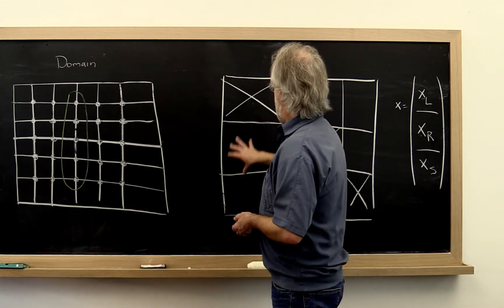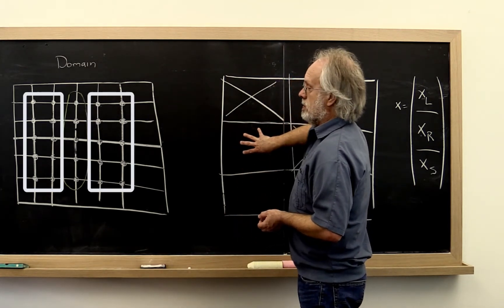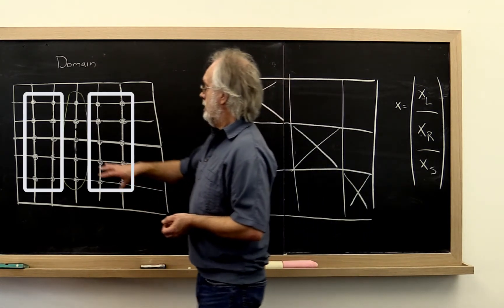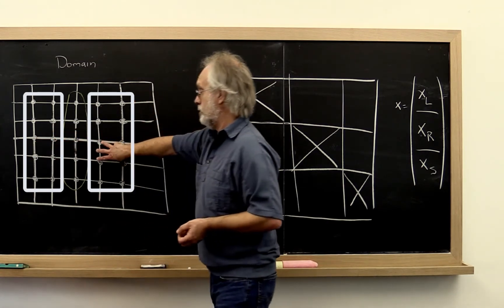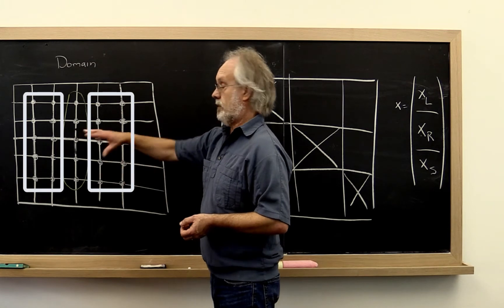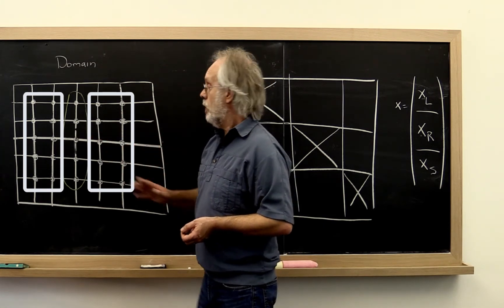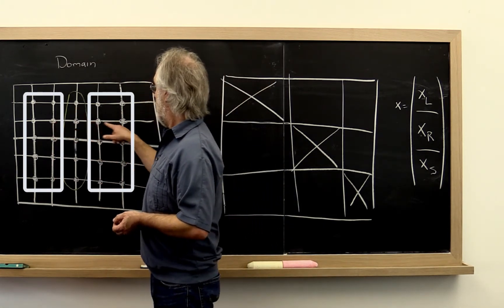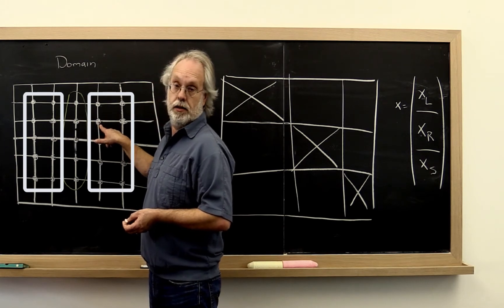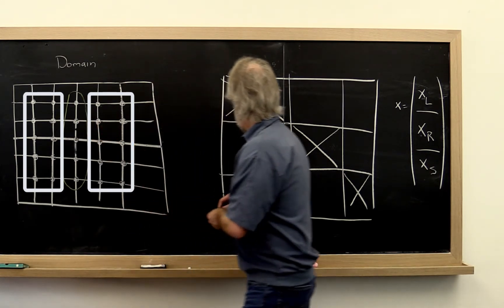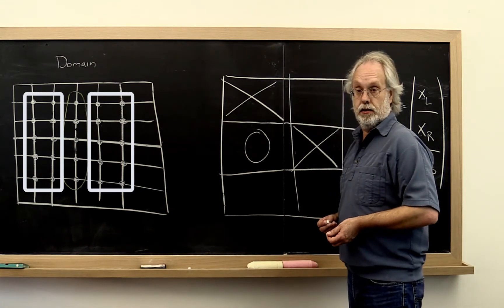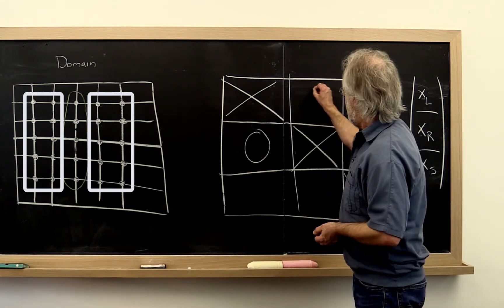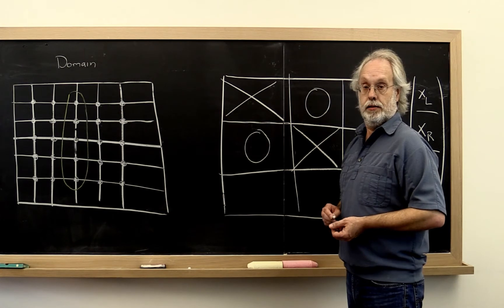However, this block right here captures how the left sub domain is connected to the right sub domain or the symmetric argument there. What we notice is that there are no connections there. What that means is that this is a nice big block of zeros right here, as is this.